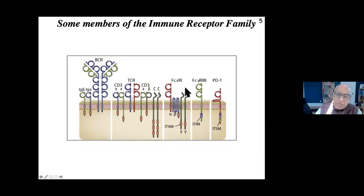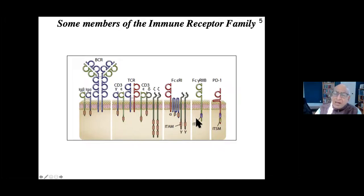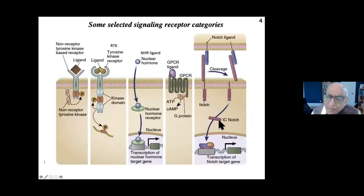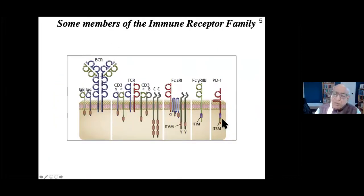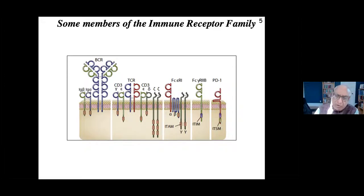Some receptors contain tyrosine-containing motifs that do not activate signaling - these are ITIMs, which recruit tyrosine phosphatases or inositol phosphatases rather than activating kinases. Then there are proteins with tails containing ITSMs - switch motifs - which in the immune system can theoretically be both activating and inhibitory. We tend to think of them in an inhibitory context, though there are certainly activating contexts as well. These are more plastic motifs.